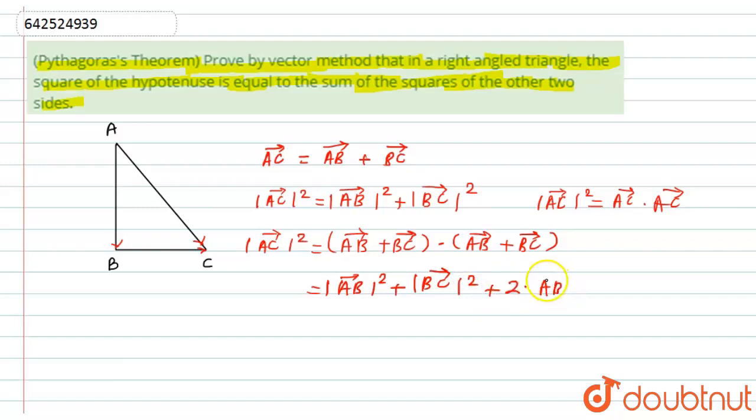Now as we know that the dot product of two vectors is always equal to 0. Hence here I will get the mod of AB vector squared plus mod of BC vector squared is nothing but equal to mod of AC vector squared.